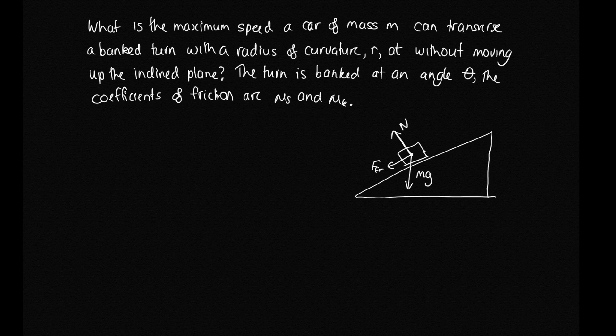Because this is a banked turn question, we're going to split the forces into vertical and horizontal components. We do that because we know the resultant force is a horizontal force back towards the centre of the radius of curvature. Let's start by splitting the normal force up — if this angle is theta, then this angle here will also be theta.